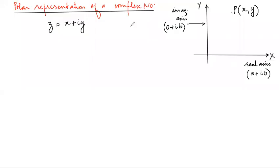Hello students, let's discuss polar representation of a complex number. We know very well that a complex number is of the form z = x + iy. This part is its real part and this part is its imaginary part.